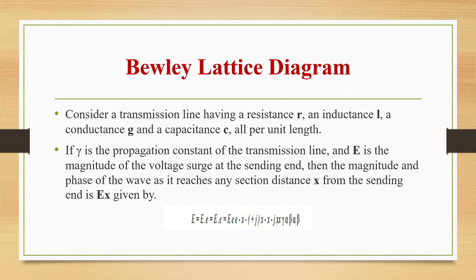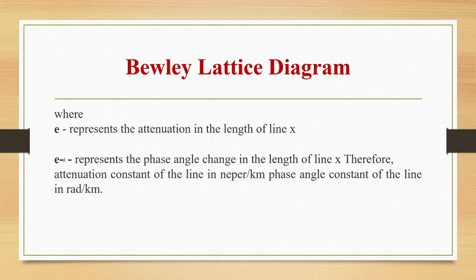If gamma is the propagation constant of the transmission line and E is the magnitude of the voltage surge at the sending end, then the magnitude and phase of the wave as it reaches any section at distance X from the sending end is given as E_X = E·e^(−αX)·e^(−jβX), where e^(−αX) represents the attenuation and e^(−jβX) represents the phase angle change over length X. Alpha is the attenuation constant in nepers per kilometer and beta is the phase angle constant in radians per kilometer.